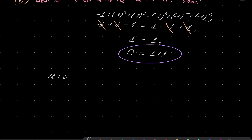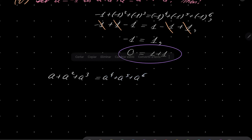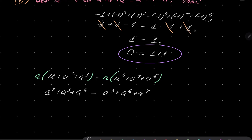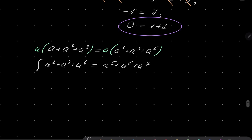Now we will use once again our assumption, this time for any element of our ring. Since this is true, I can multiply on both sides by A. And now I know that this is true: A squared plus A to the third power plus A to the fourth power equals A to the fifth, to the sixth, to the seventh. So this is true, but also our original equation is true for every element.